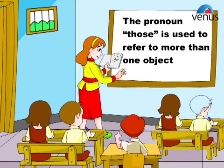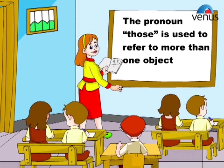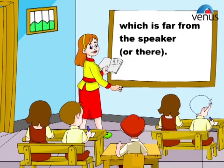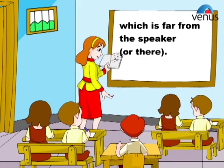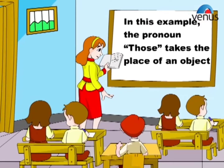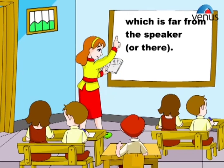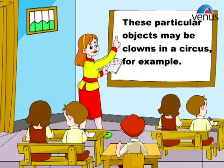The pronoun 'those' is used to refer to more than one object which is far from the speaker, or there. Example: Those are funny. In this example, the pronoun 'those' takes the place of objects which are far from the speaker. These particular objects may be clowns in a circus, for example.